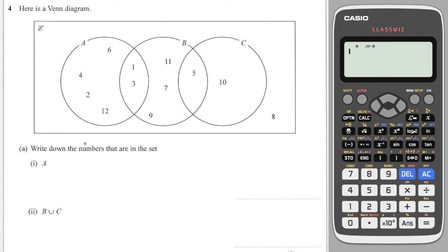Okay, we have a Venn diagram here, and it says write down the numbers that are in set A. Well, we've got 4, we've got 2, we've got 12, we've got 6. And a lot of people miss out 1 and 3, but 1 and 3 are in A because it's everything inside this circle here.